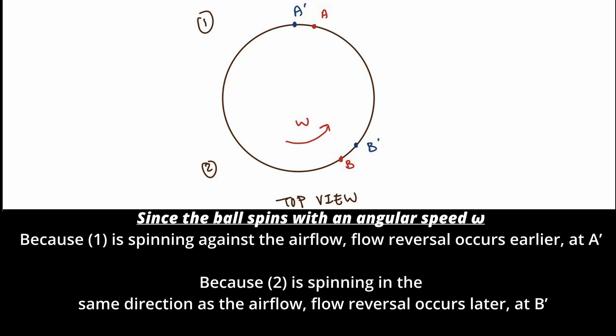Since the ball spins with an angular speed omega, because one is spinning against the airflow, flow reversal occurs earlier at A'. Because two is spinning in the same direction as the airflow, flow reversal occurs later at D'.